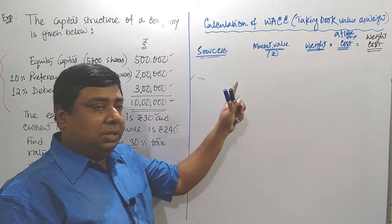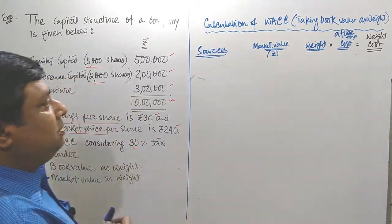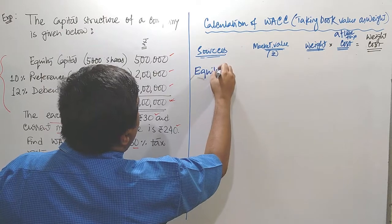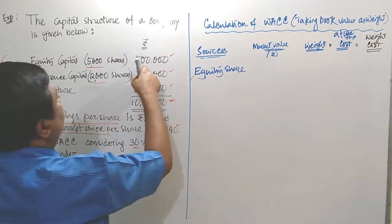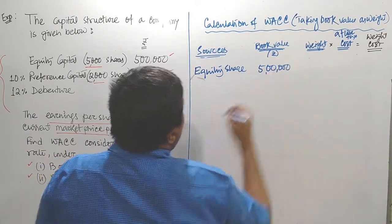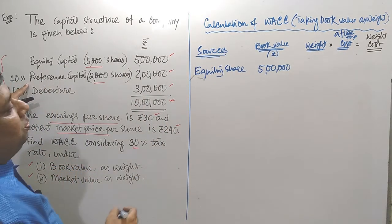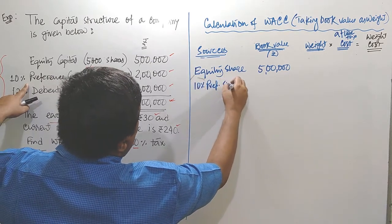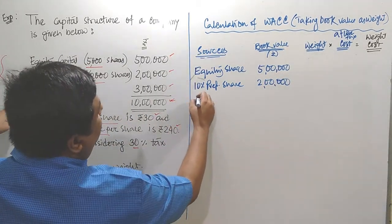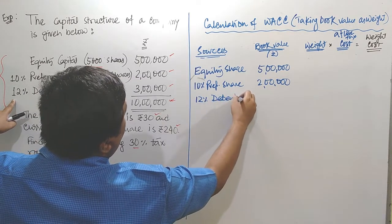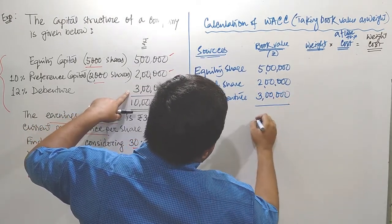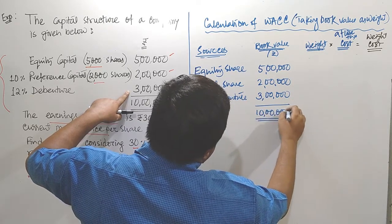First, we will calculate WACC taking book value. Let me list the different components of capital. First is equity share capital with a book value amount of 5 lakhs. Next is 10% preference share capital with an amount of 2 lakhs. Next is 12% debenture at 3 lakhs rupees. The total is 10 lakhs.